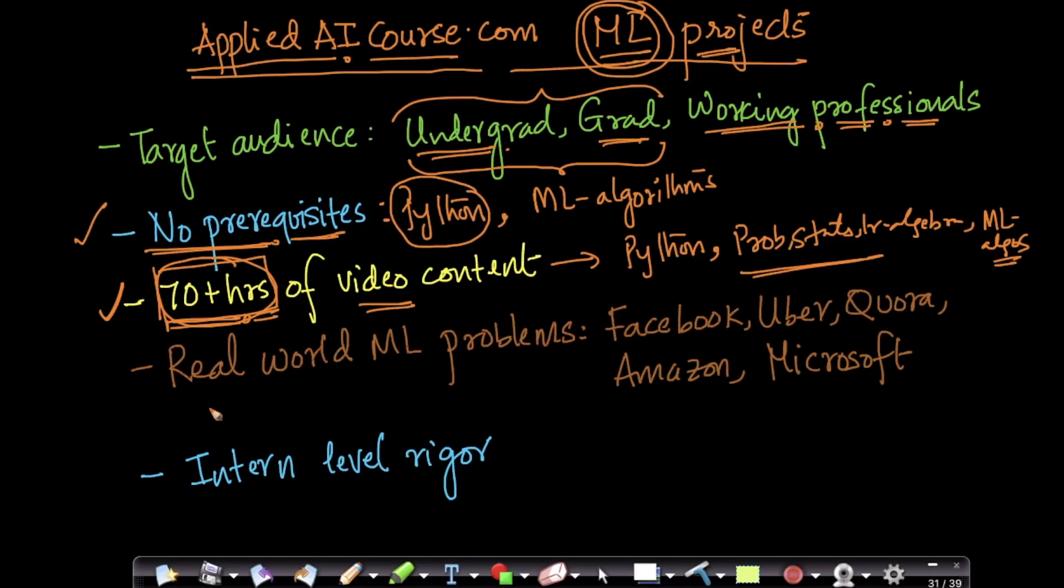To give you a sense of what types of projects we have, all of our projects are very real world machine learning problems. We have taken real world problems from companies like Facebook, Uber, Quora, Amazon, Microsoft etc. So all of our problems are very real world problems, these are not cooked up problems. These are problems that engineers and scientists at top-notch companies solve.